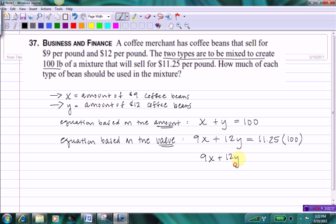9X plus 12Y, and if I go ahead and multiply the 11.25 with the 100, I get a result of 1,125. So my two equations will be X plus Y equals 100, and 9X plus 12Y equals 1,125.